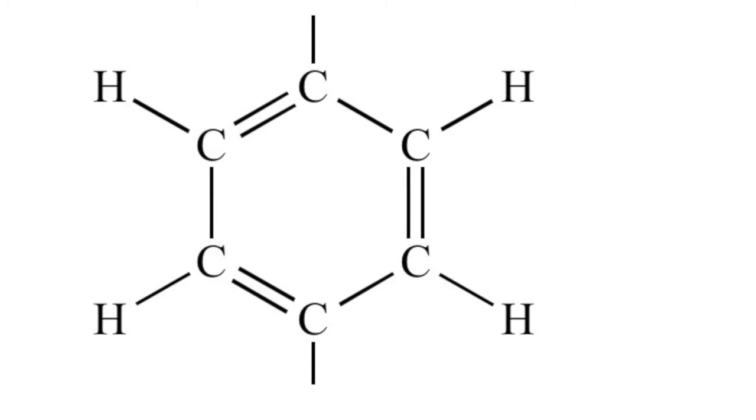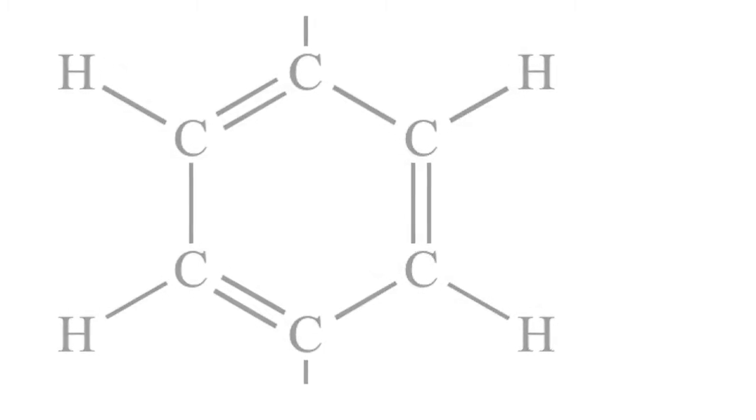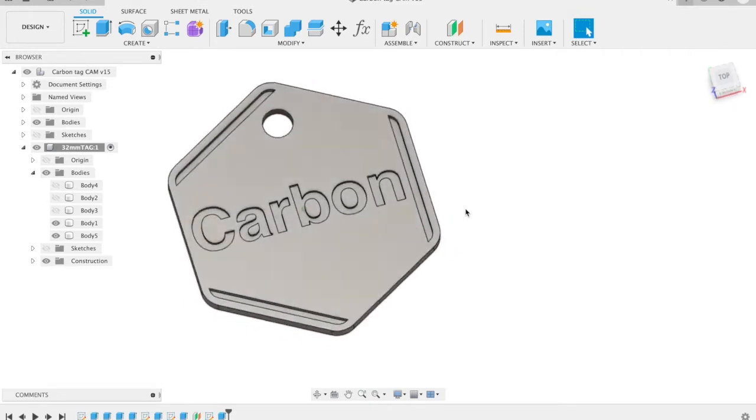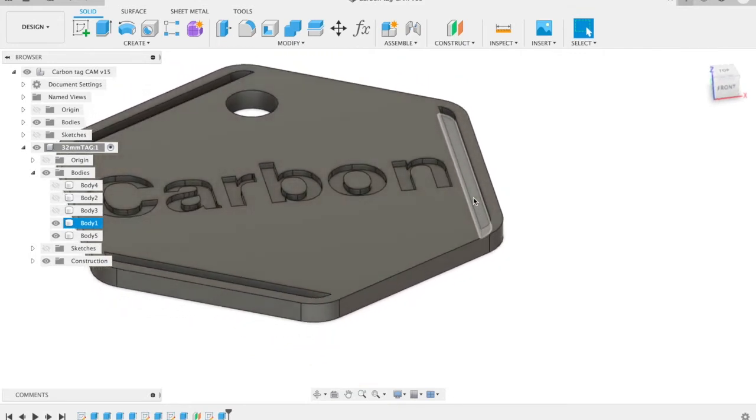Ever since we brought him home, I've had the idea to make him a name tag out of carbon fiber. To tie in the organic chemistry, I came up with this design in the shape of a benzene ring, modeled using Fusion 360. It's 32 millimeters in diameter and has a text relief that is 0.75 millimeters below the surface.